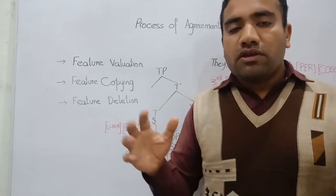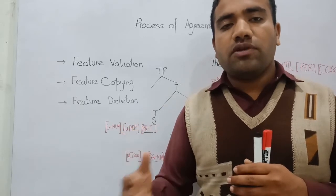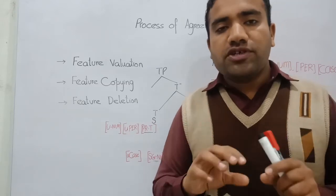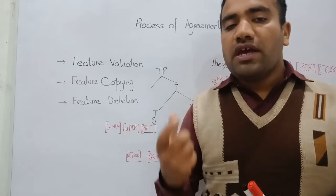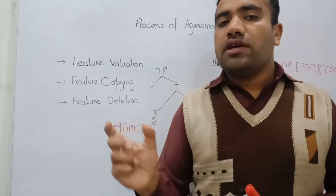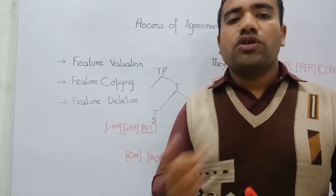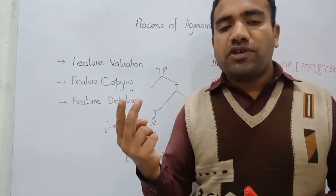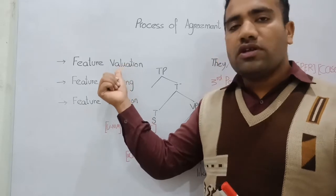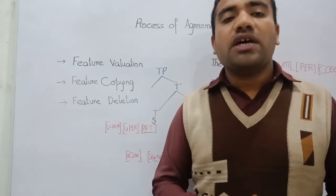In feature valuation, the features of one category have been semantically valued, while other features cannot be valued at this point. Every category has some specific value. For example, the pronoun 'they' has person, number, and gender features. Two features of 'they' have been valued — the person feature is valued — but one feature has not been valued.